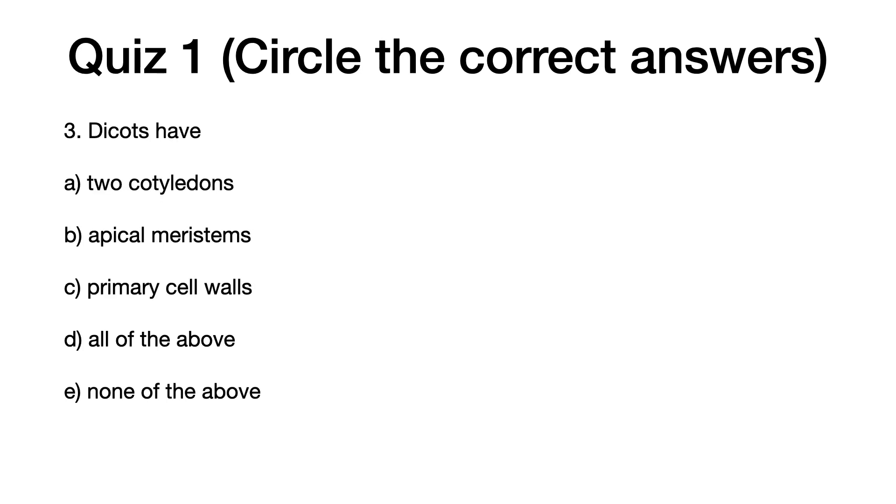Question three: Dicots have. A: two cotyledons. B: apical meristems. C: primary cell walls. D: all of the above. E: none of the above. The correct answer is D, all of the above.